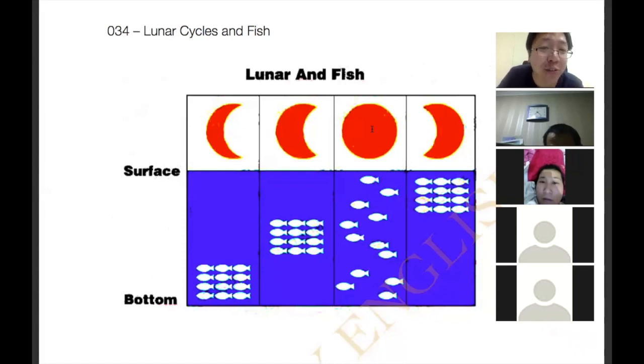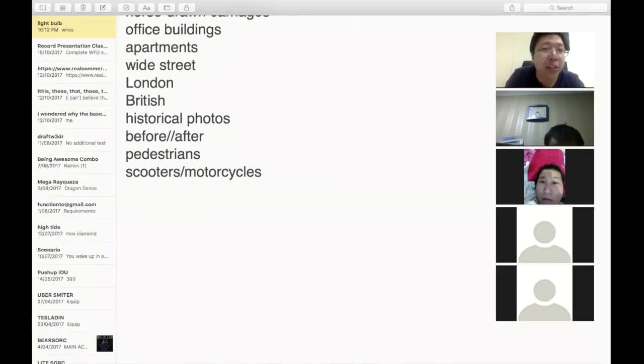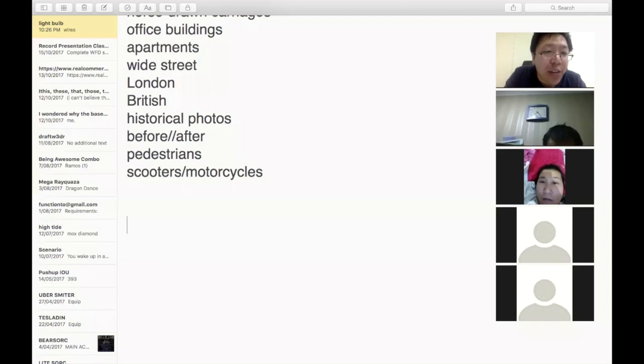I'll just quickly list down the types of things you're going to want to say. Obviously lunar and fish, we had surface, bottom, you can also just put middle there. You can talk about the colors: red, white, blue. What about the moon shapes?